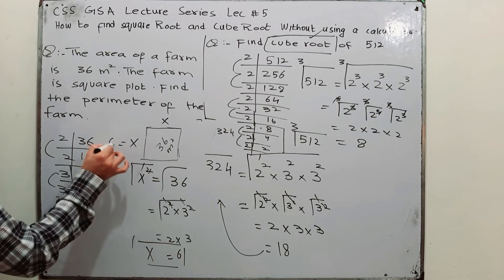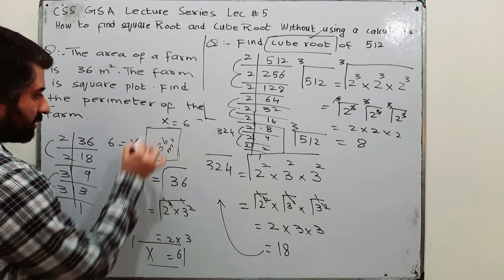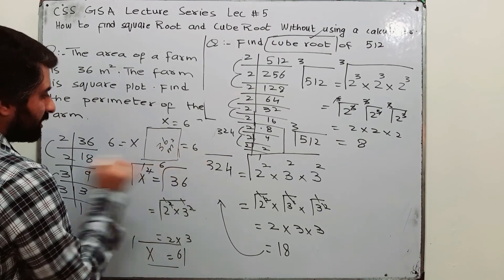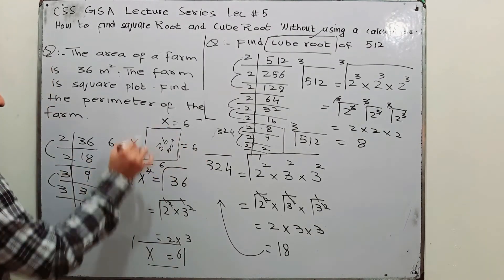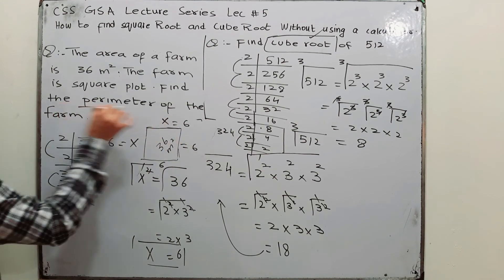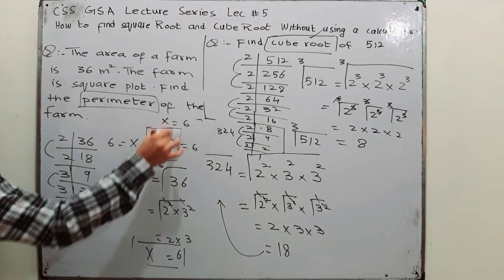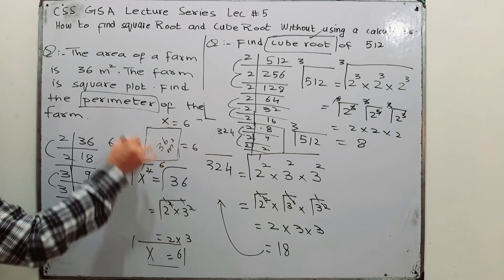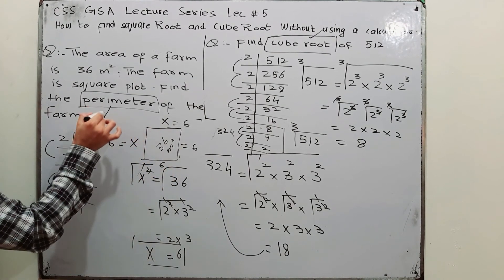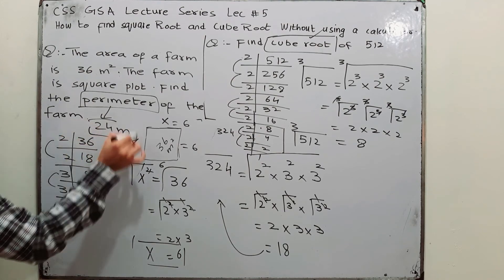So the side length is 6 meters. In a square, all sides are the same — 6, 6, 6, and 6. The perimeter is the boundary, which means adding all the side lengths: 6 + 6 + 6 + 6 = 24. So the perimeter is 24 meters.